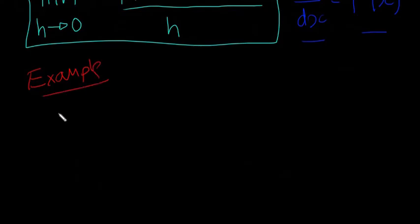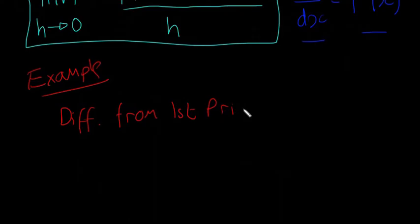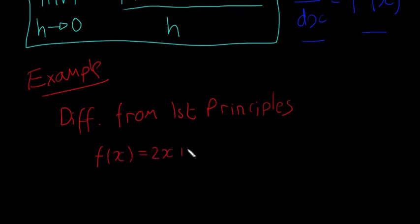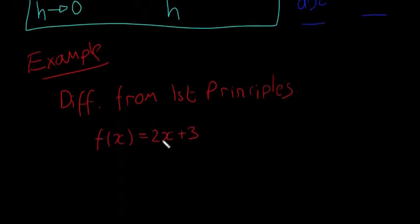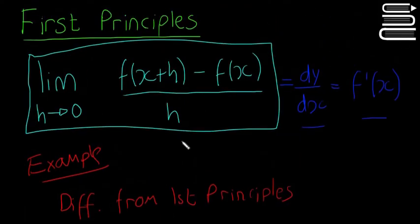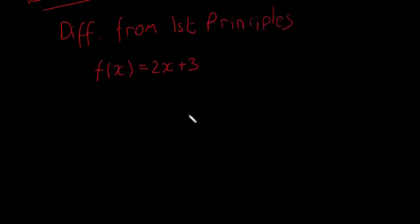So what they might say is: differentiate from first principles. And then they give you a function. For example, if they give you f(x) = 2x + 3, so you have to differentiate this from first principles. This is just a method you have to learn — and then that's about it. You won't have to look at it again, as long as you know just this formula and how to use it, you're done with it.